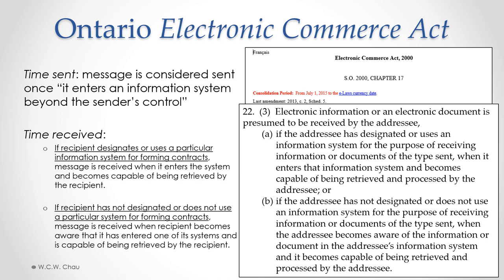The second rule applies where the recipient has not designated or does not use a particular system for forming contracts. In that case, the message is received when the recipient becomes aware that it has entered one of their systems and is capable of being retrieved. So if I did not specify how you should reply, and you choose email on your own, your message is considered received when I become aware it's available — typically when I receive a notification or ping on my phone indicating a message has arrived in my inbox.